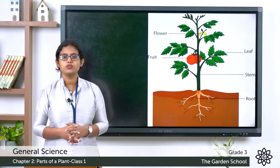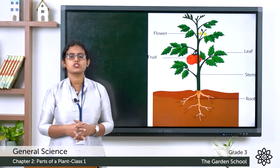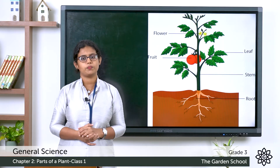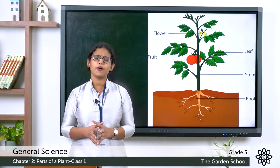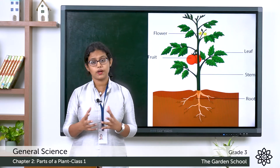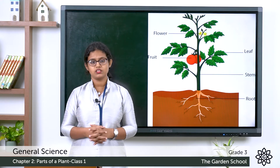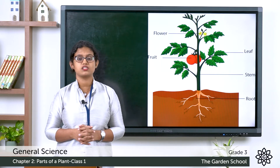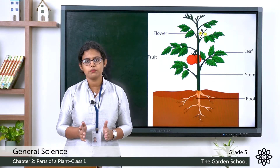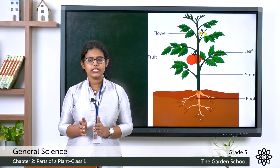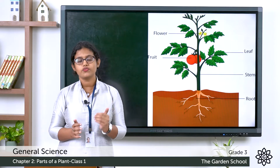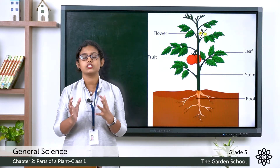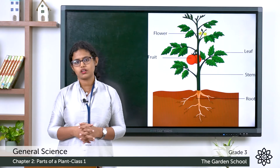Now let's move on to the next topic: the parts of a plant. There are six parts in a plant — the root, stem, leaf, flower, fruit, and seed are the different parts of a plant.